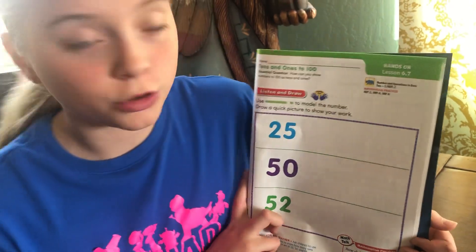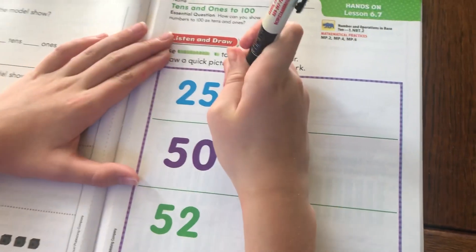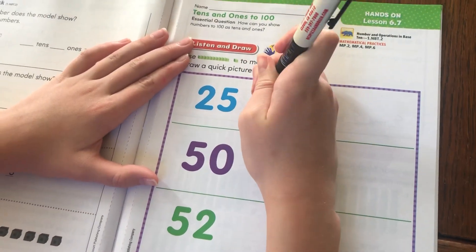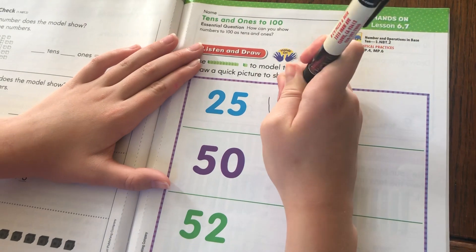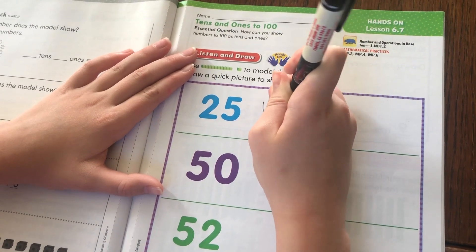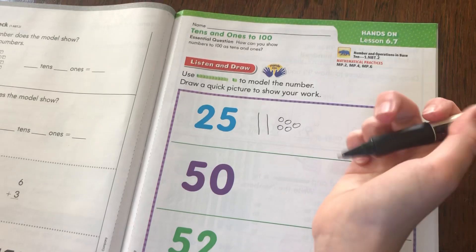I'm going to use quick tens and quick ones. So since we have 25, I know that one is 10, so 10, 20, and then one, two, three, four, five. How would you count that? I would say 10, 20, 21, 22, 23, 24, 25.